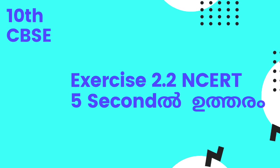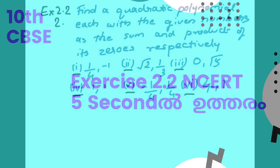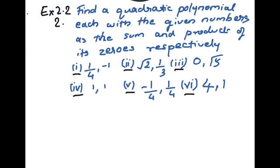We are going to talk about this question: Find a quadratic polynomial, each with given numbers as the sum and product of its zeros respectively. We need to find the sum of zeros and product of zeros. There are 6 sub-questions.